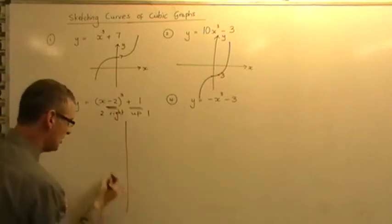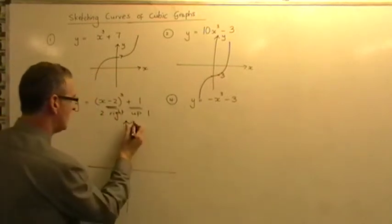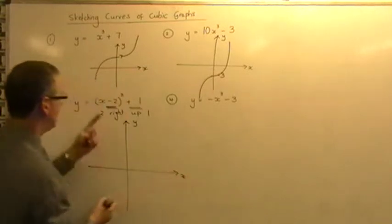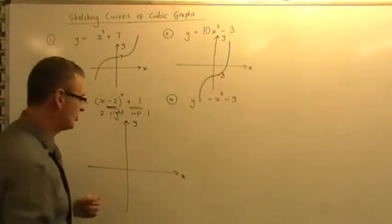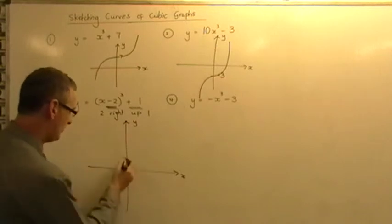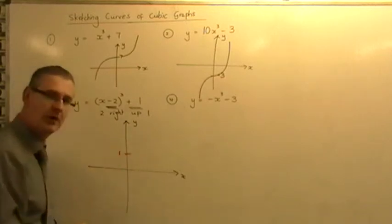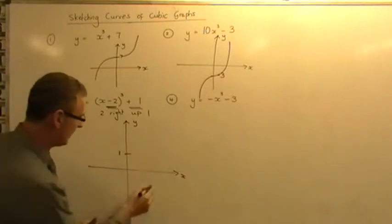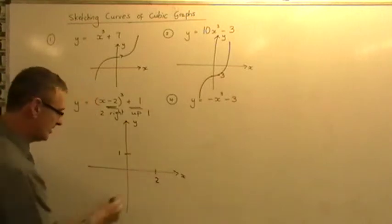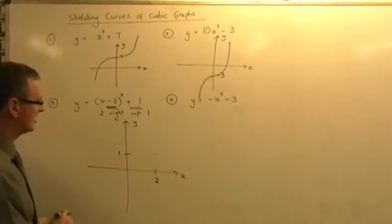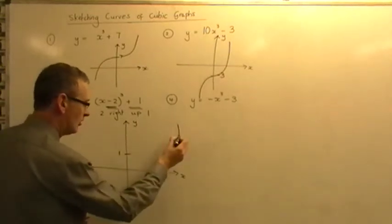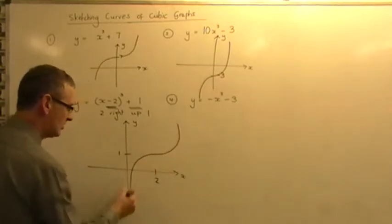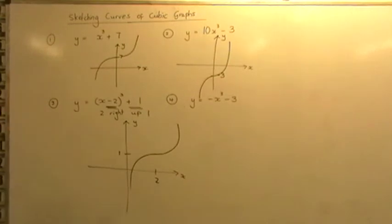So my sketch is going to become, here we go, a basic x cubed sketch. Move one up, so I move up one on the y axis, and minus two in the bracket means two right to plus two on the x axis. Put a dot where they intersect, and you need to simply draw your basic x cubed curve, something like that, in that position.